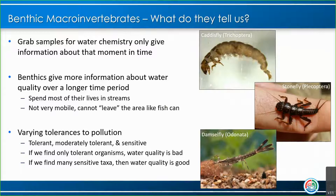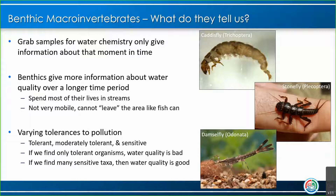Why do we use benthic macroinvertebrates to monitor streams? If I were to go out to a stream tomorrow and take a water sample and measure pH, temperature, and dissolved oxygen, that doesn't give me much information about the stream over a long period of time — it's basically just a snapshot of what water quality is like at that moment. But benthic macroinvertebrates give us a better idea about water quality over time because they live the majority of their lives in streams, some reproduce in streams, and they're not very mobile like fish. If water quality is bad, they can't just leave and find a better place to live — if they can't survive, they'll die and won't be present in that stream segment.